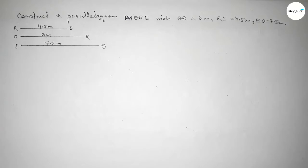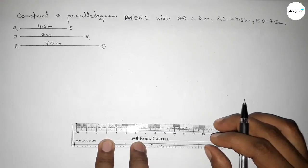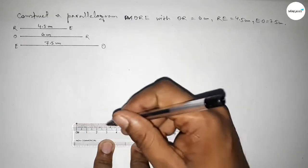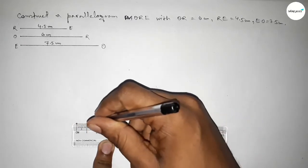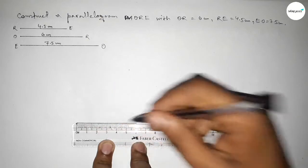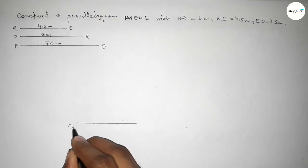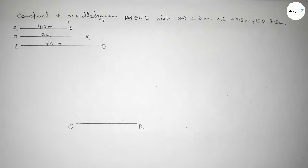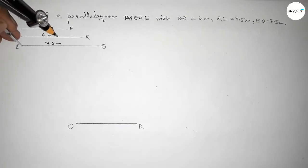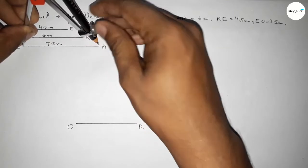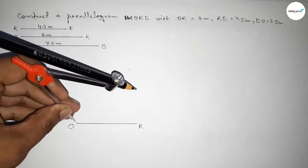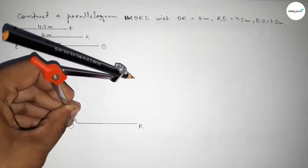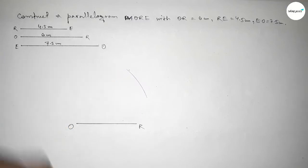Now we have to draw a line of length 6 centimeters. Drawing the line and taking point O here and point R here. Now taking the length 7.5 centimeters by using compass and putting the compass on point O and drawing an arc.